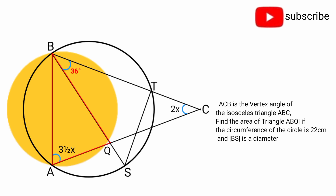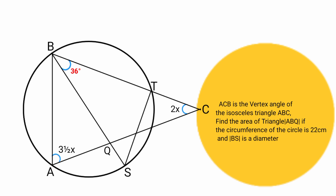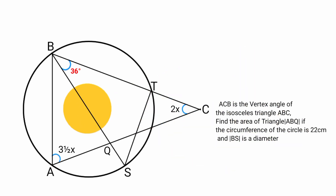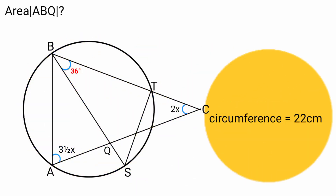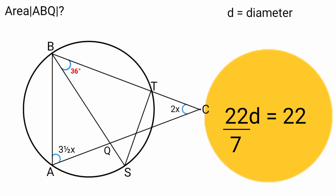To find the area of a triangle we need the length of its sides, but we can find them from the given data. Since line BS is a diameter of the circle and the circumference is 22 centimeters, we use the formula circumference equals pi times D. So pi D equals 22, where pi is 22 over 7, giving us 22 over 7 times D equals 22.